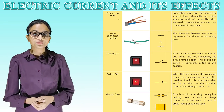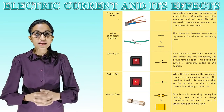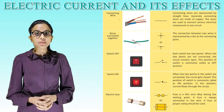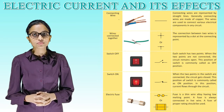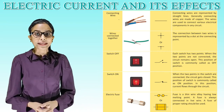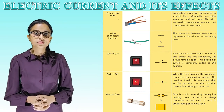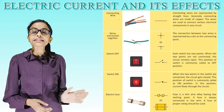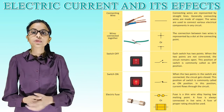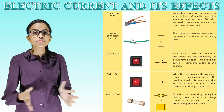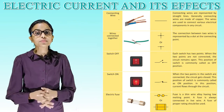Connecting wire — here is its picture and symbol. Connecting wires are represented by a straight line. Generally, connecting wires are made of copper. The wires are used to connect various electrical components in any circuit. Wires connected together — the connection between two wires is represented by a dot at the connecting point.